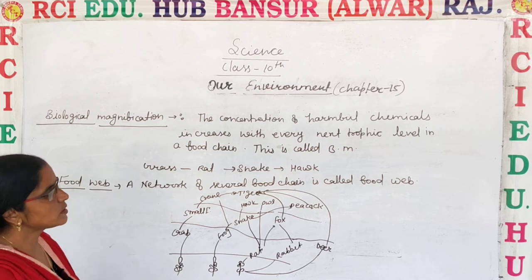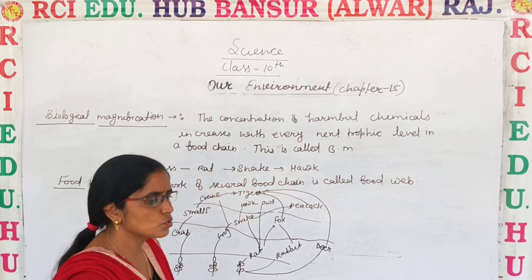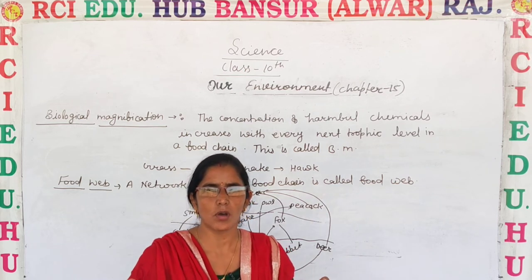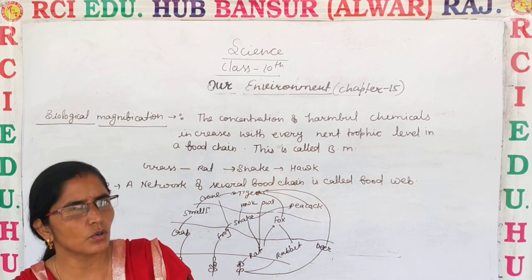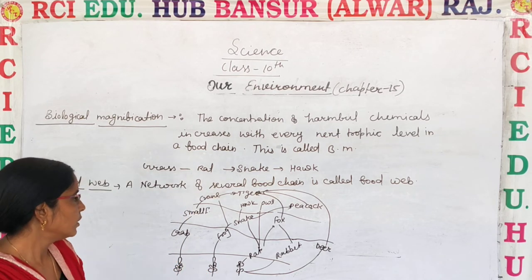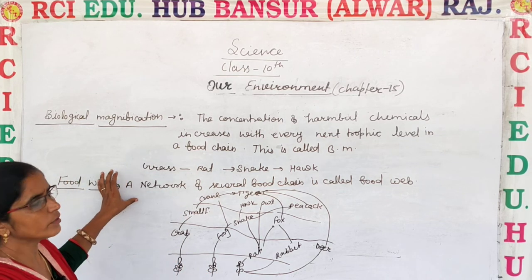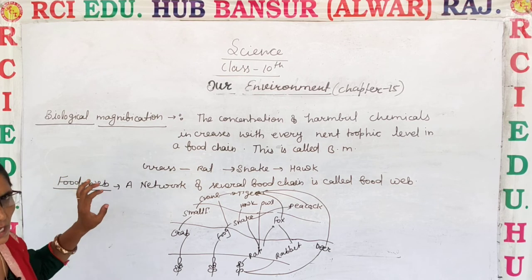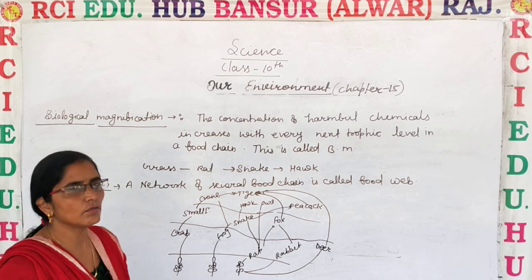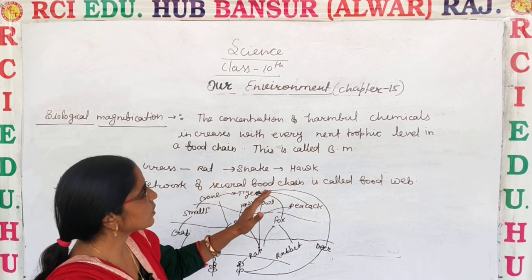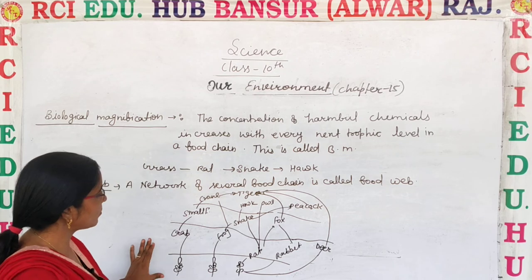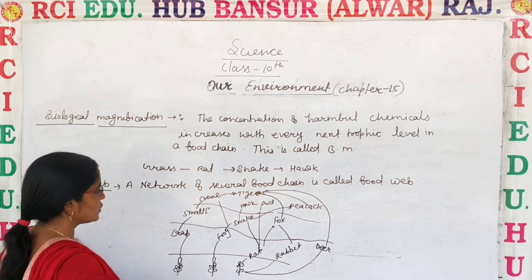The second topic is the food web. We have already discussed food chain — a food chain is a linear series or linear sequence of organisms in which one organism eats another organism for food. A food web is a network of several food chains interconnected together, and that network is known as a food web.